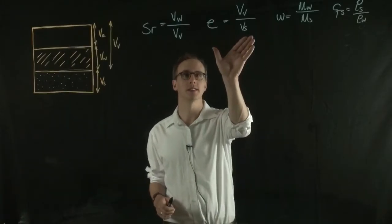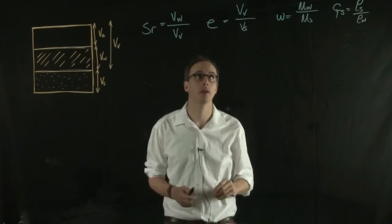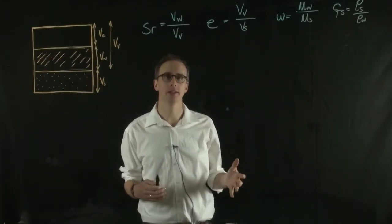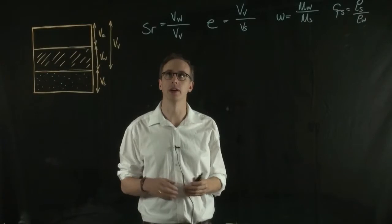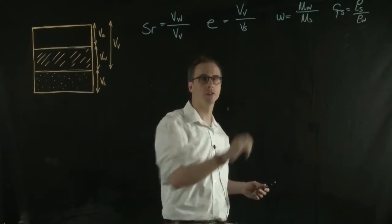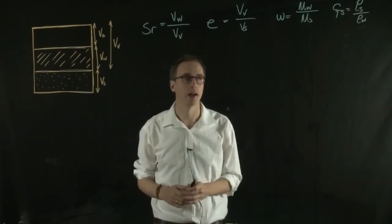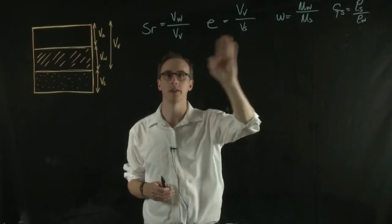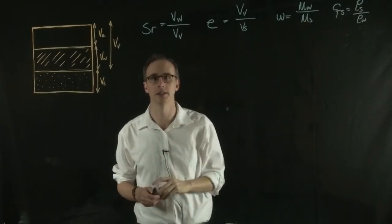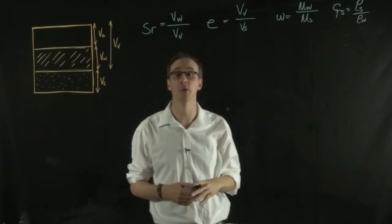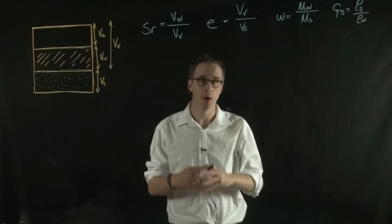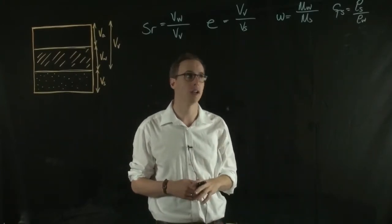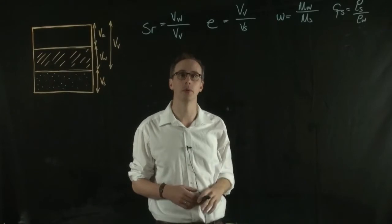We've just defined the void ratio parameter. We can relate it to the parameters that we've previously defined: saturation ratio, water content, and specific gravity. Remember that water content and saturation ratio describe something to do with the water in the soil. We can connect these things together through a single equation, and I'm going to go through the proof of that now.